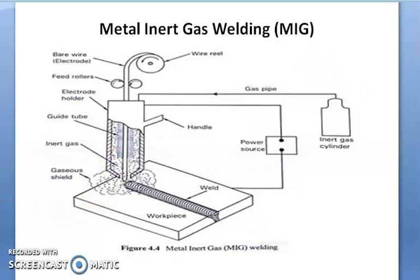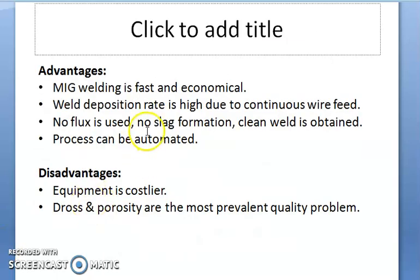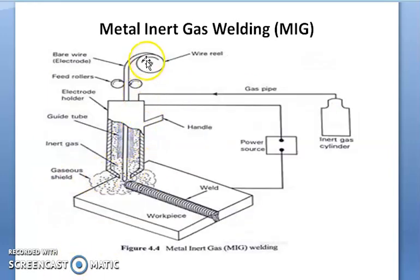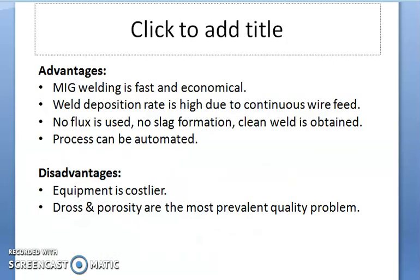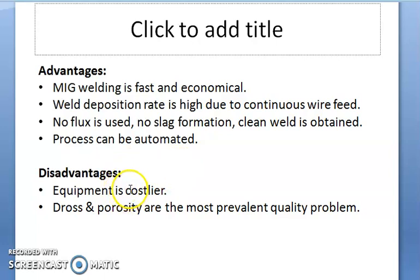The advantages of MIG welding are: it is fast and economical due to the continuous feeding of the electrode. The weld deposition rate is high due to continuous wire feeding. There is no flux used and no slag formation, so a clean weld is obtained. The process can be automated — once the setup is ready, it welds automatically and no skilled operators are required.